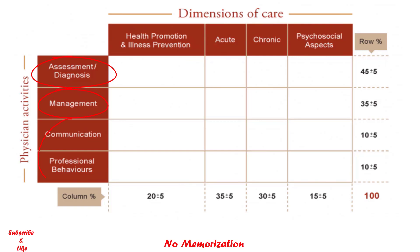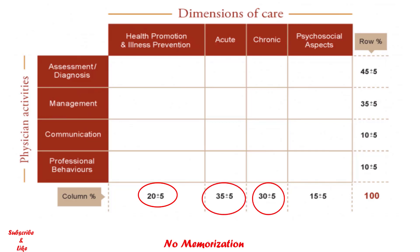Physician activities dimensions are assessment or diagnosis, management, communication, and professional behaviors. That is how the Q1 examination is assembled based on this blueprint. On the dimensions of care, around 20 percent will be on health promotion and illness prevention, 35 percent on acute care, 30 percent on chronic care, and 15 percent on psychosocial care.